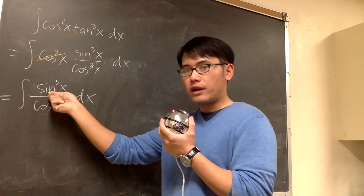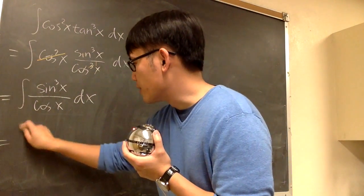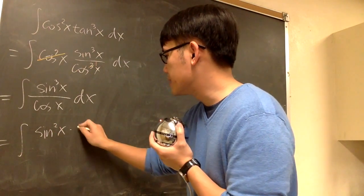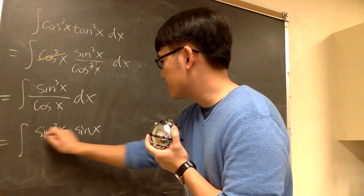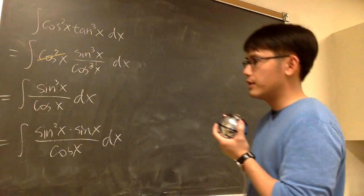The trick is, I'm going to break this apart as sine squared times sine. So let's look at what good does that do for us. Sine squared x times sine x over cosine x dx.